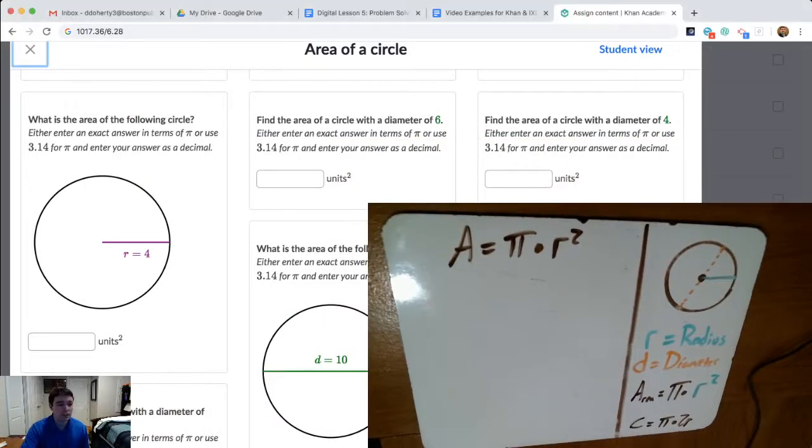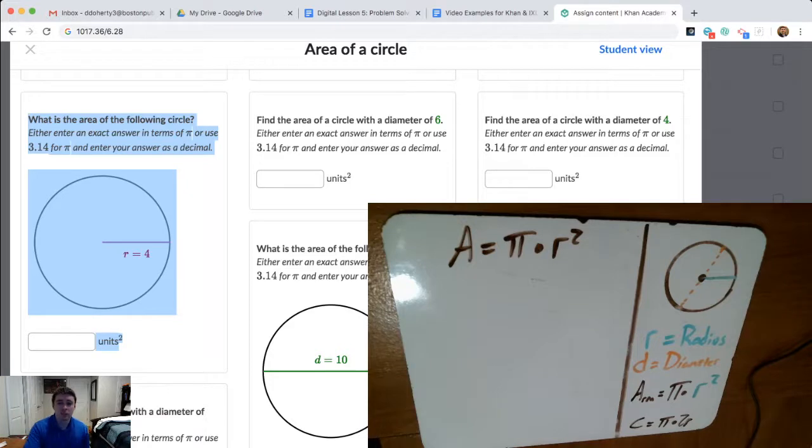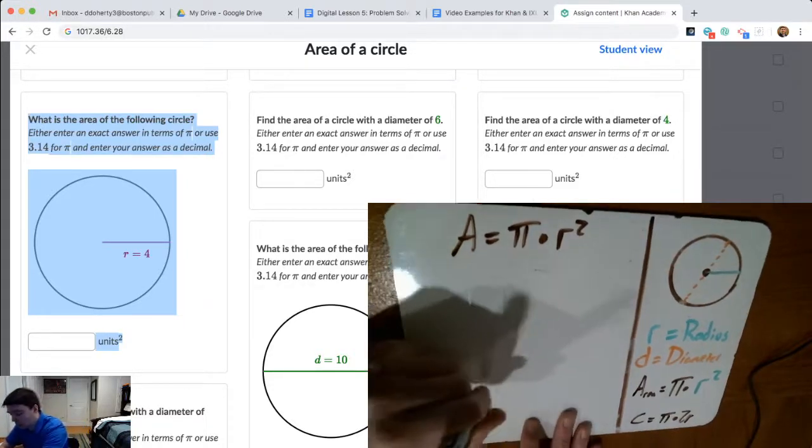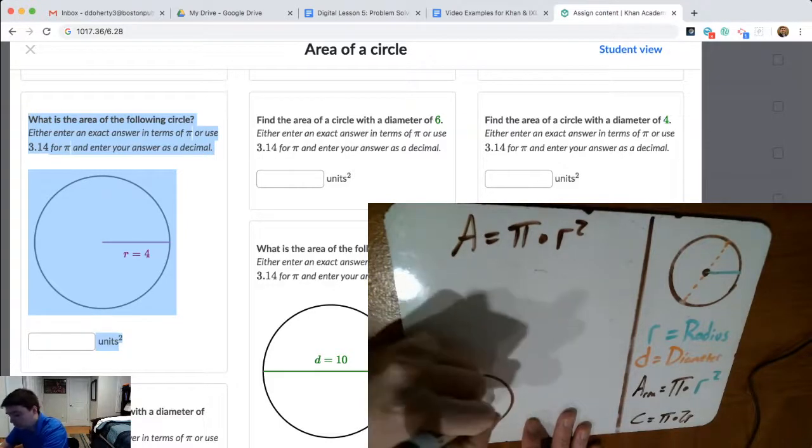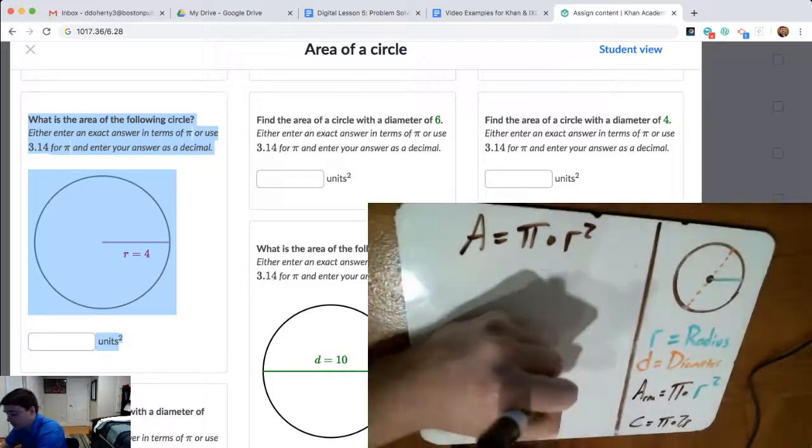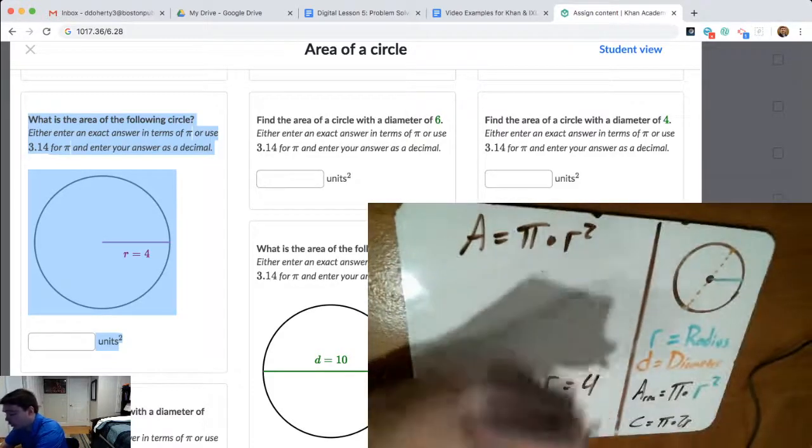The first example that we're going to look at, I'm highlighting here. It says, what is the area of the following circle? And the directions also say, enter either an exact answer in terms of pi, or you could use 3.14 for pi and enter your answer as a decimal. So the key to see for this circle here, which I will replicate or draw on my whiteboard, that circle measures 4 units from the middle to the outer edge. So if it's 4 units from the middle to the outer edge, that means the radius is equal to 4 for that circle.